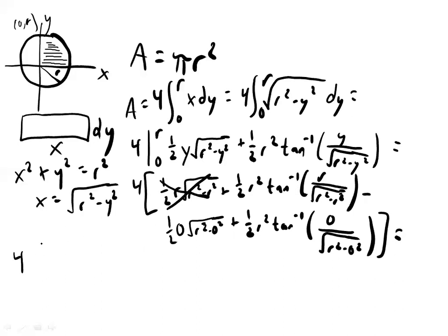So I'm going to write that down. 1 half r squared tan inverse r divided by 0. It's looking a little weird. This part has a 0, so that's going to go away.